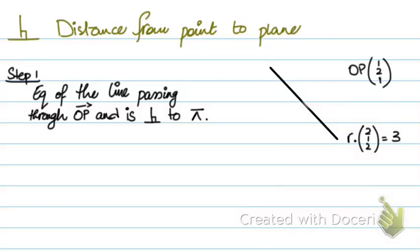How do you calculate the perpendicular distance from a point to a plane? I have this point, OP = (1, 2, 1), and I have the vector equation of a plane: r · (2, 1, 2) = 3, where (2, 1, 2) is the normal vector of the plane.